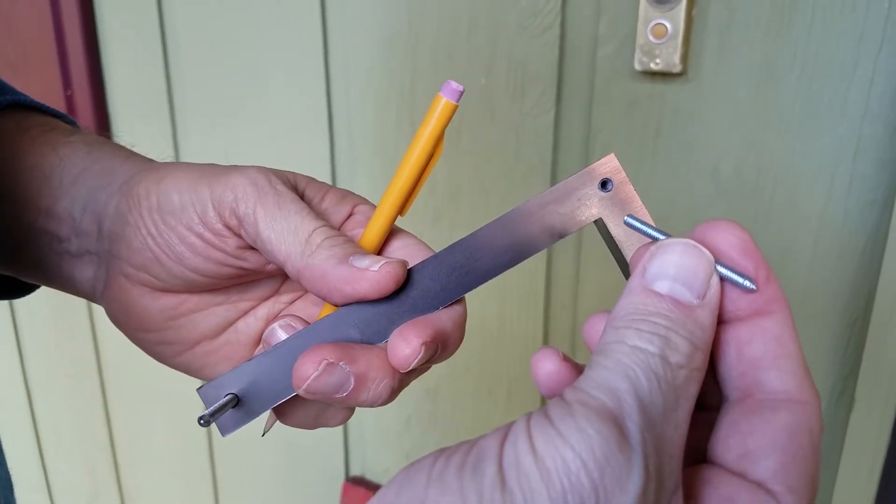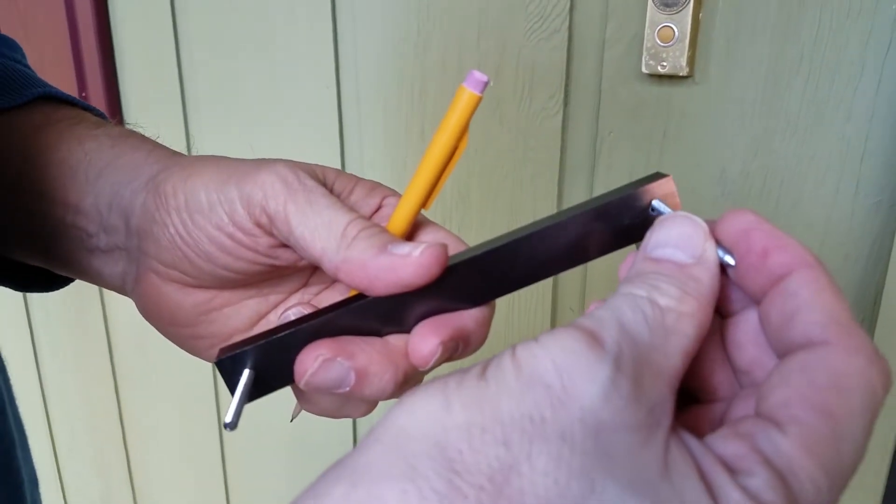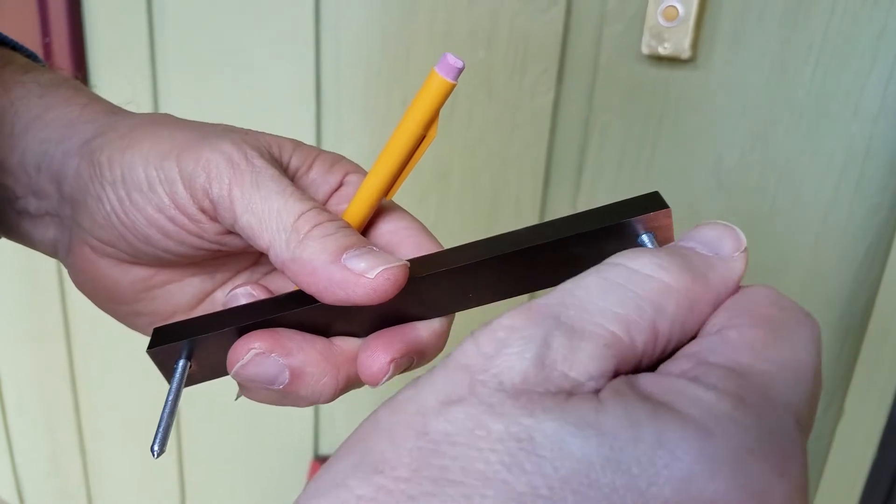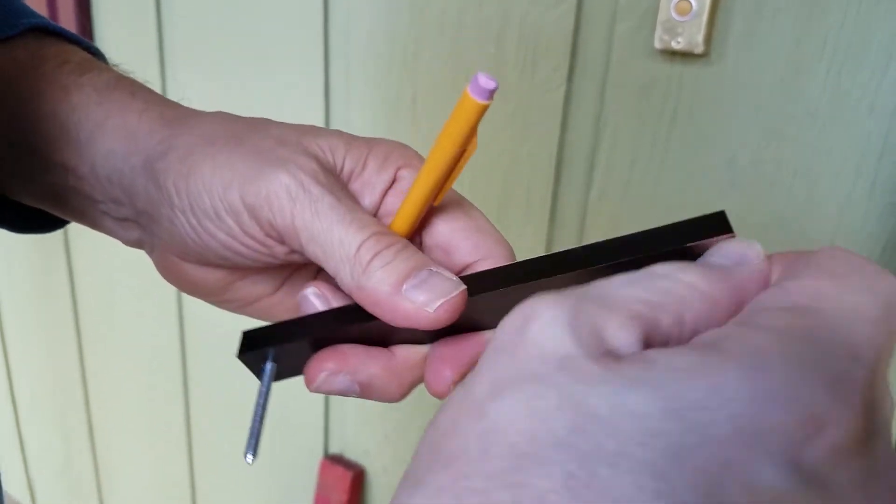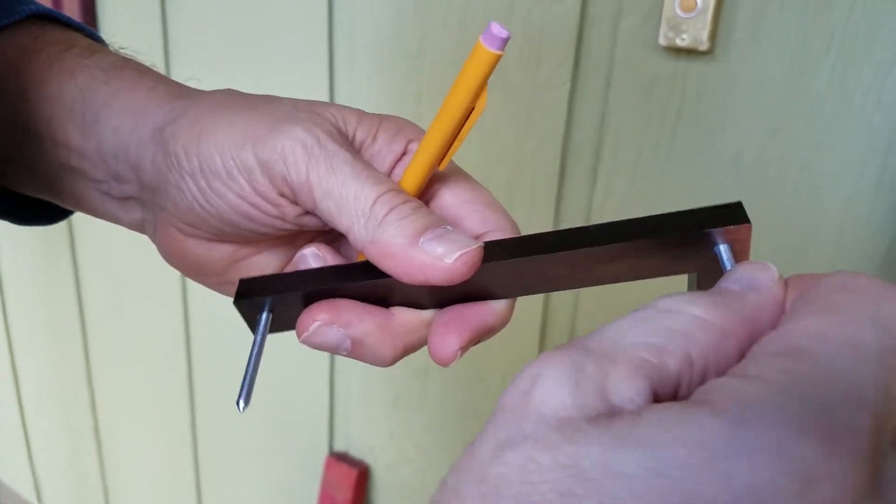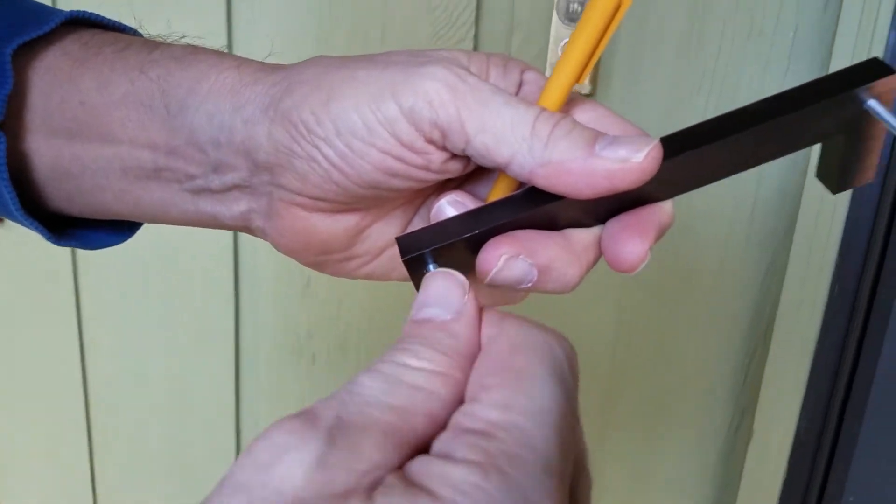In order to know where we're going to drill, we take the screws supplied with the kit. One end is pointed, the other is flat, and we're going to screw in that flat end. The idea is you're going to need it to go in as far as possible.